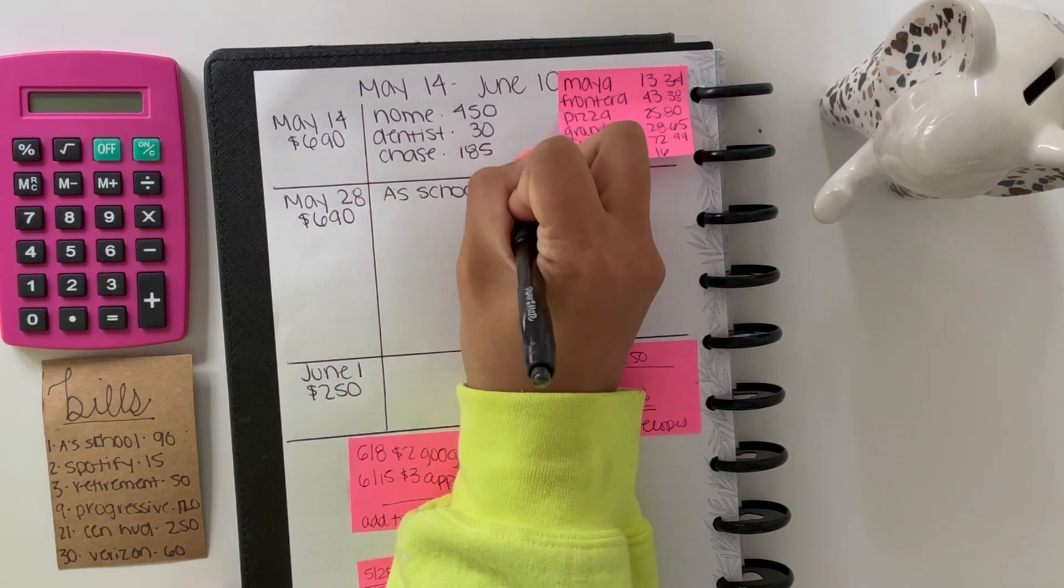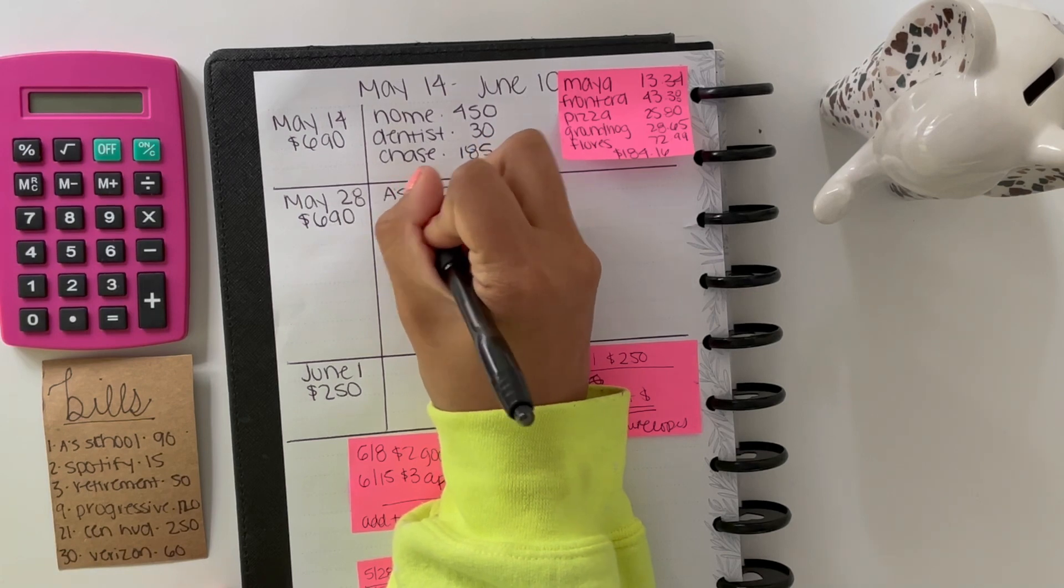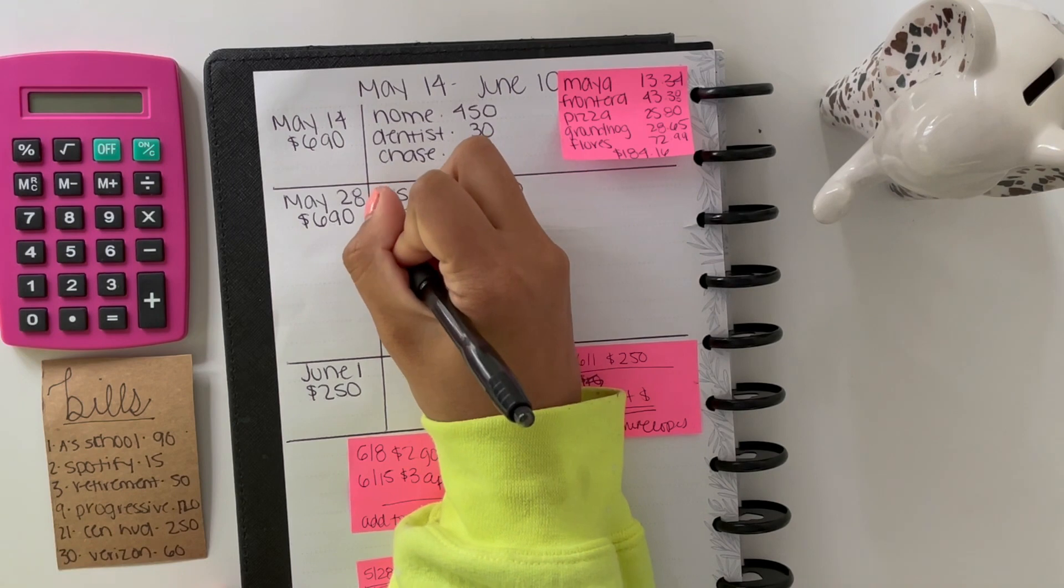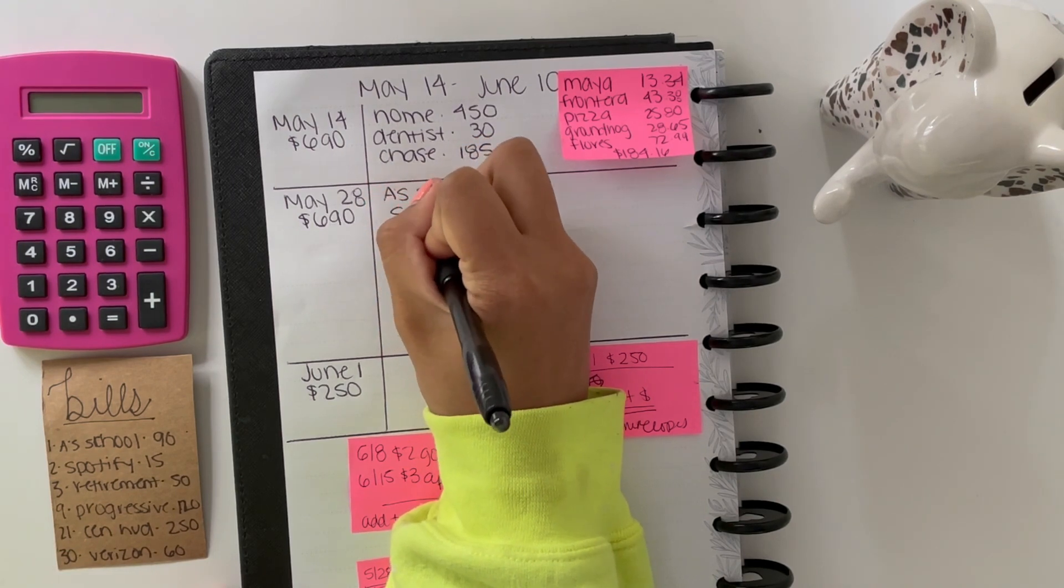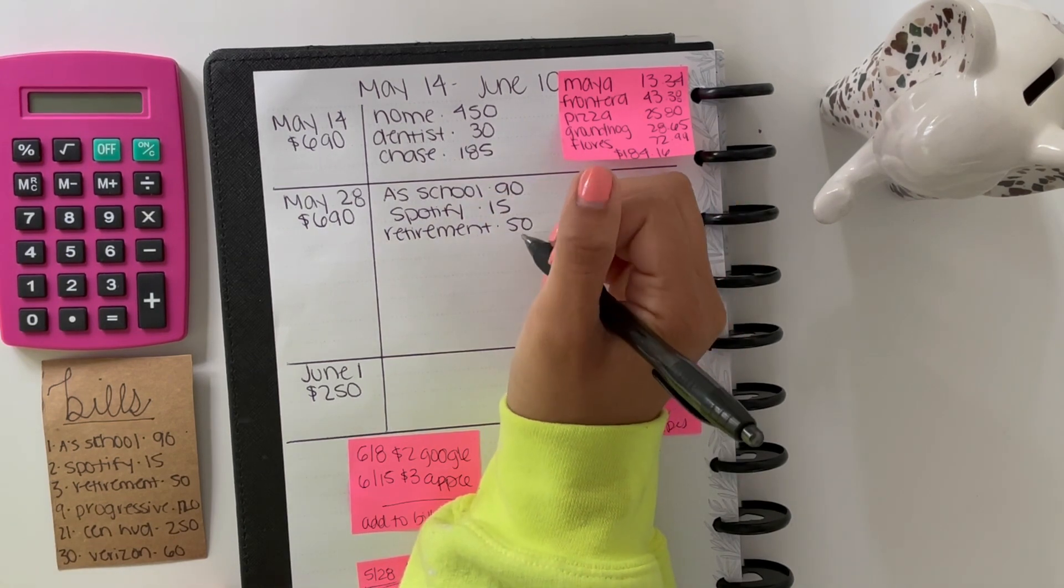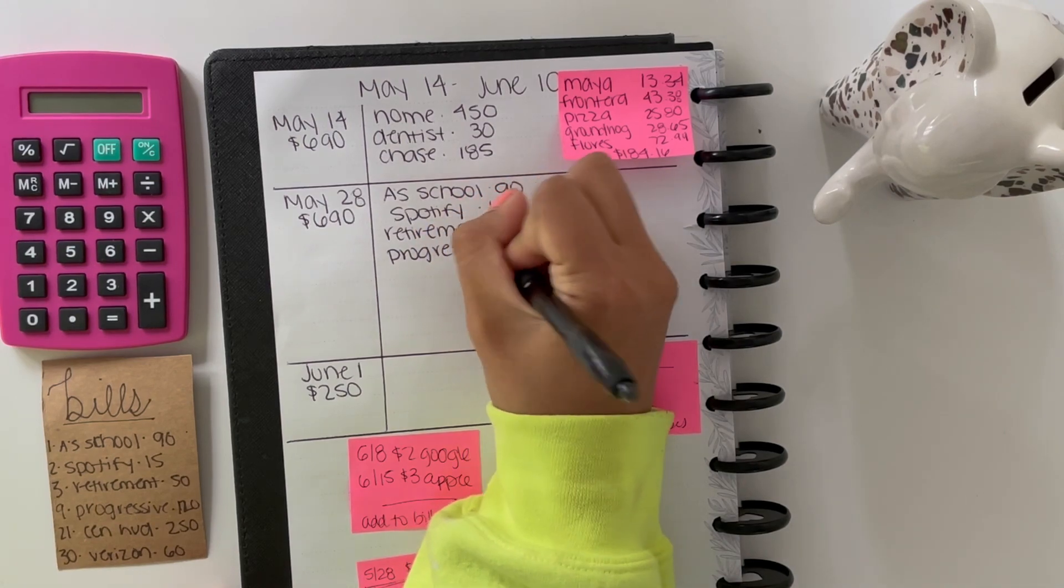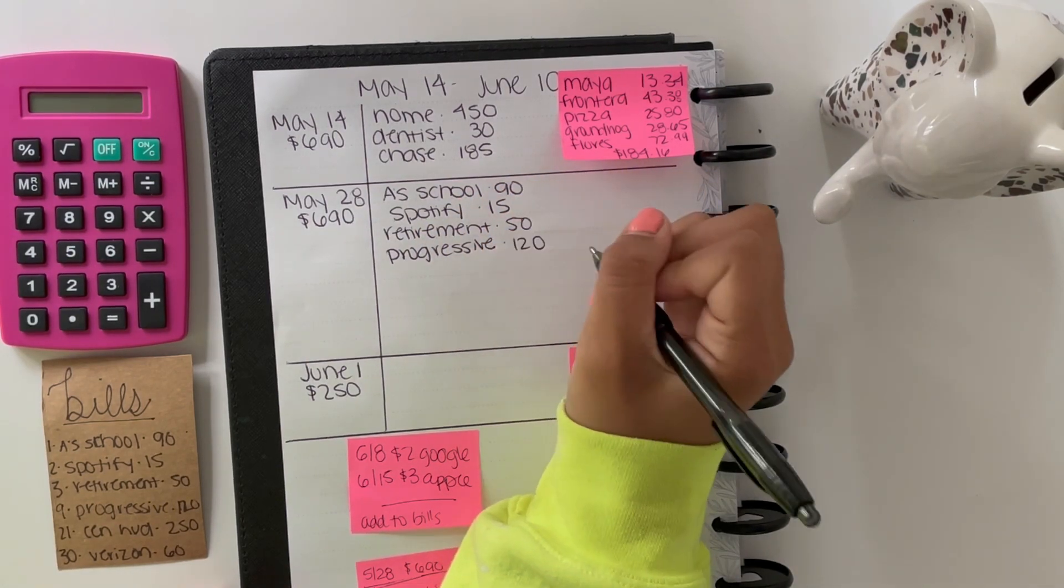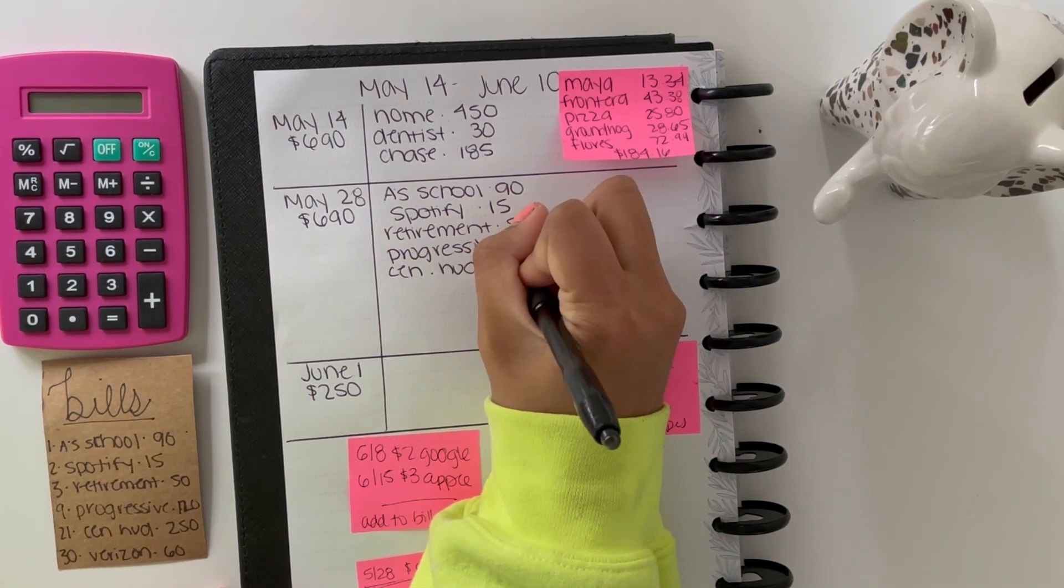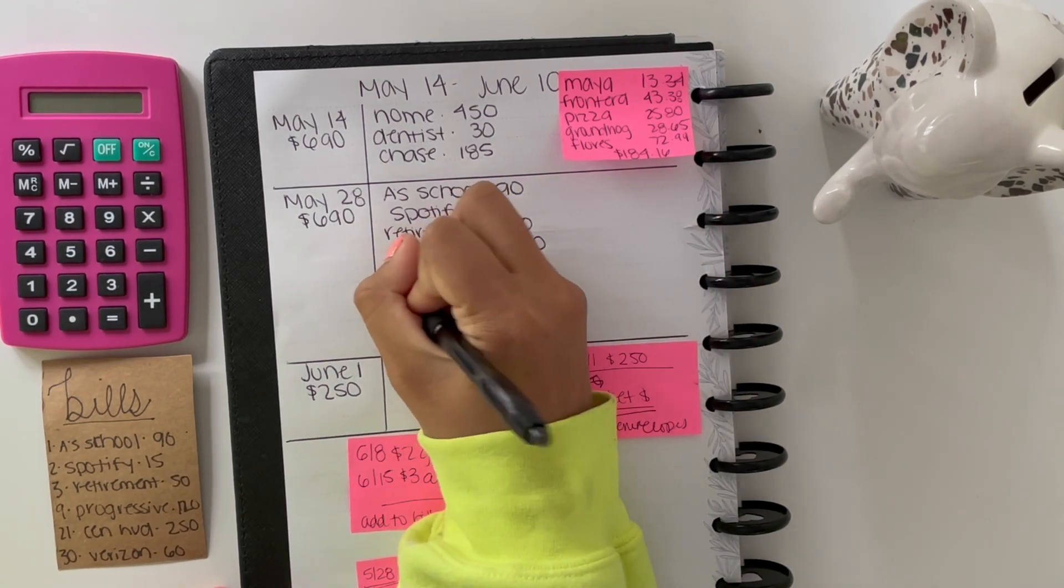For my son's school it's $90 and we split that payment, it's $180 a month. Spotify is $15, retirement gets $50, and Progressive is my car insurance, that is $120 a month. Central Hudson is the gas and electric here and that is $250 a month.